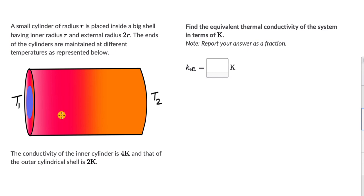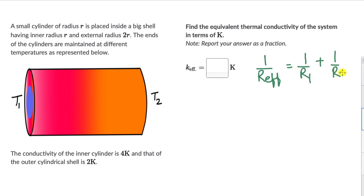We can find the equivalent thermal resistance for rods connected in parallel, which is given by: 1 over R_effective equals 1 over R1 plus 1 over R2, where R_effective is the equivalent thermal resistance and R1 and R2 are the thermal resistances for rod 1 and rod 2. We also know how thermal resistance is related to thermal conductivity: R equals L divided by KA.